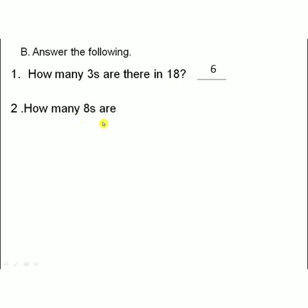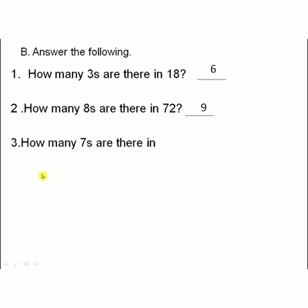How many 8's are there in 72? Here we take the 8 times table. When does 72 come in the 8 table? 8 nines are 72, so the answer is 9. How many 7's are there in 42? When does 42 come in the 7 table? 7 sixes are 42, so the answer is 6.